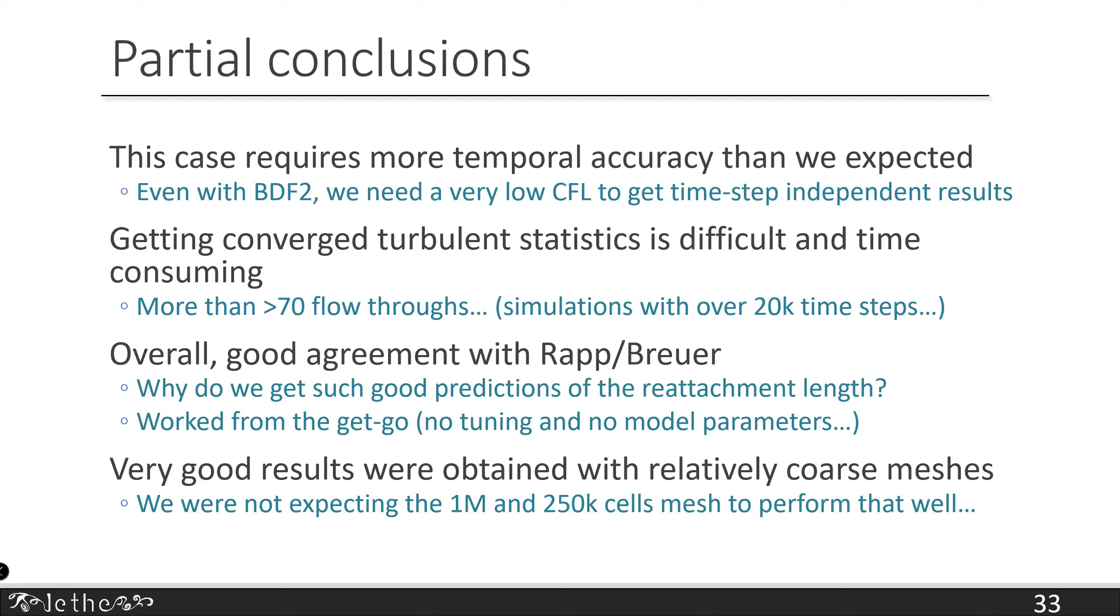Some partial conclusions: this case requires more temporal accuracy than I expected. Even with second-order time stepping, we need very low CFL to get time step independent results. Getting converged turbulent statistics is difficult and time consuming. Some results require 70 or 100 flow-throughs, so about 20,000 time steps or more. Overall, there's very good agreement with the Rapp and Breuer data. I'm not sure why we get such good prediction for the reattachment length. I'd like to understand it better. The cool thing is there is no model, no subparameter, no tuning, no calibration. It's really just an implicit LES solver. I'm a bit surprised about the coarse mesh results, but it's very interesting. From an engineering perspective, it means I could simulate an industrial process at this type of Reynolds number with a coarse mesh and still get results, at least for the average flow, that are statistically significant and relevant.